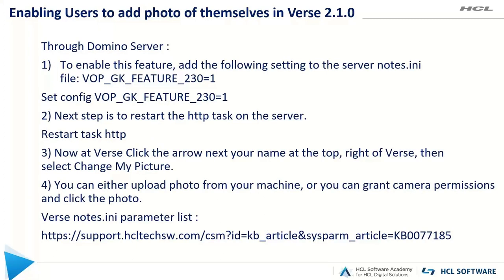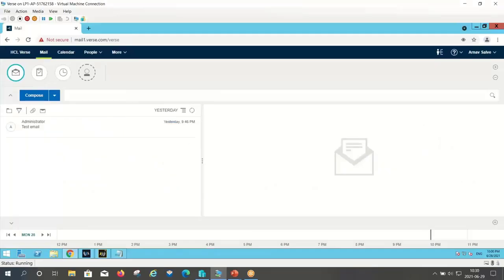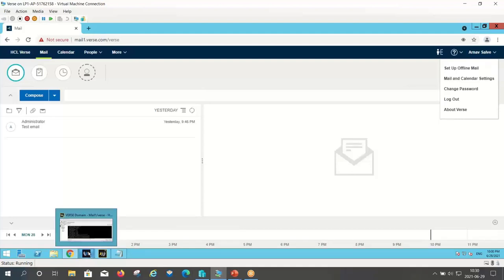To enable users to upload photos through Domino server, we need to add a node.ini parameter: vop_gk_feature_230 equal to 1 on the Domino server. Next we need to restart the HTTP task on the server. Here I have already logged in to Verse and you can't see any option to upload photos, so let's add the node.ini parameter.